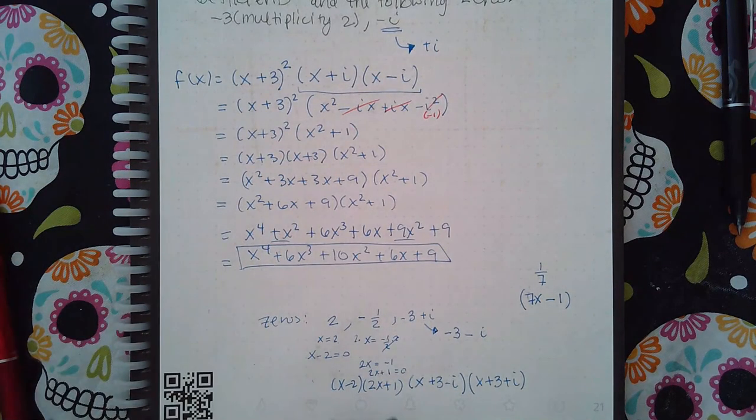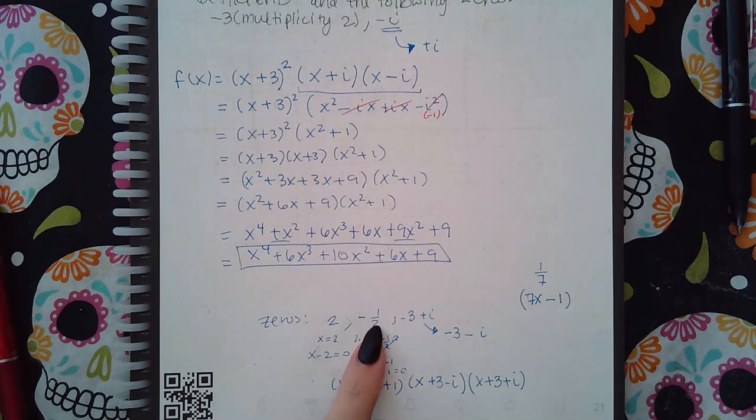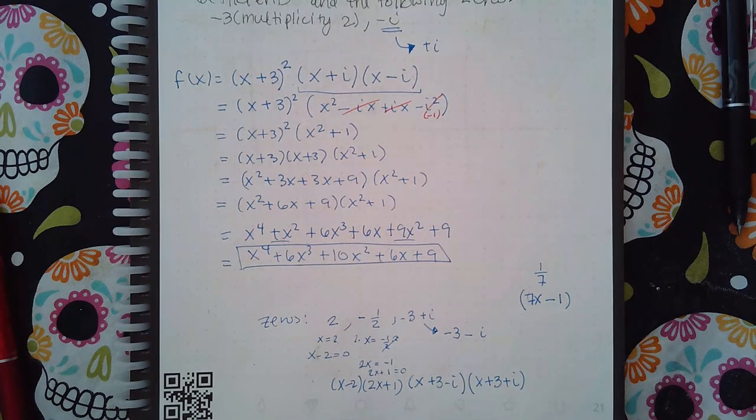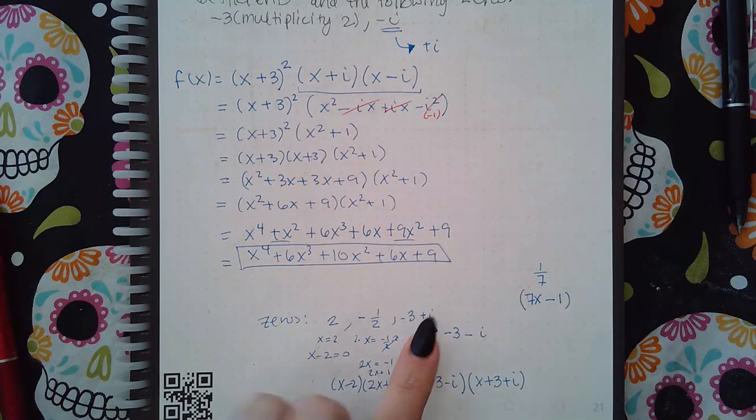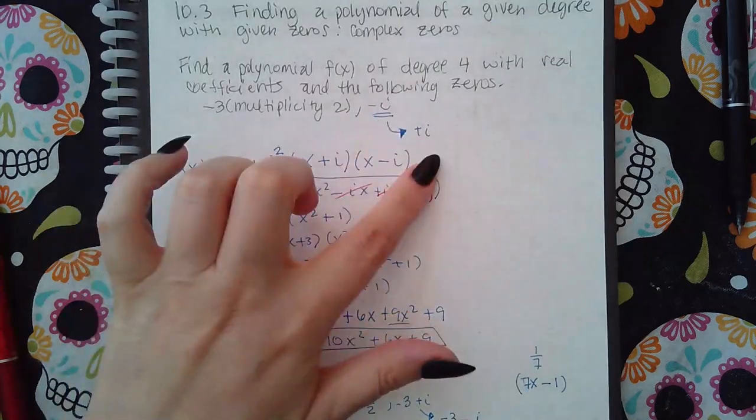So I just wanted you to be aware of what happens when your zero is a fraction, what does that look like in the factor, and then I also wanted you to know what to do when you had imaginaries that look like this and they weren't just i or negative i.